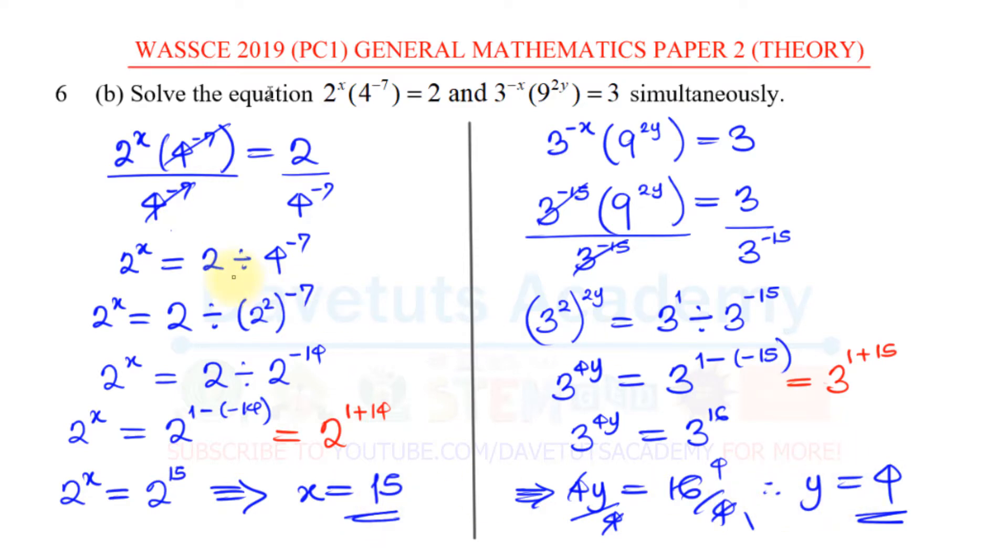You can also try some many processes to solve questions like this whenever you come across them. But here, the answer is x is 15 and y is 4.